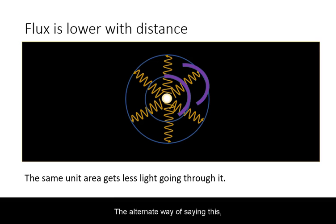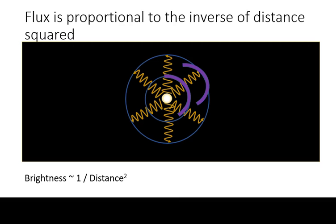The alternate way of saying this is that the power per unit area or flux decreases with distance. Because the area is a function of radius squared, therefore the flux decreases as the distance squared from the light source.